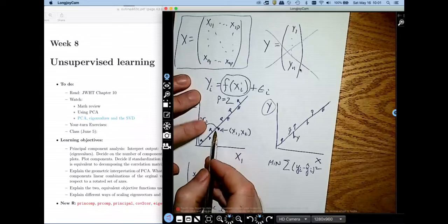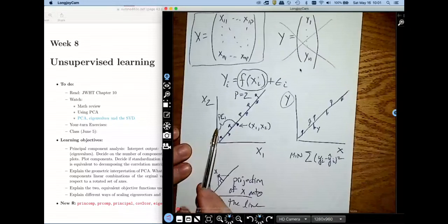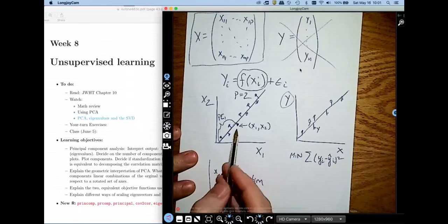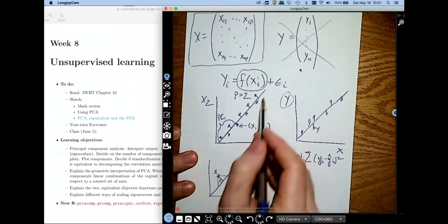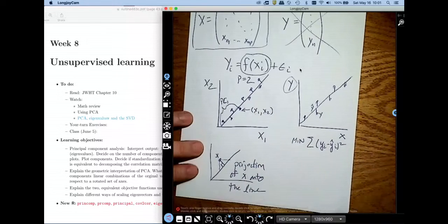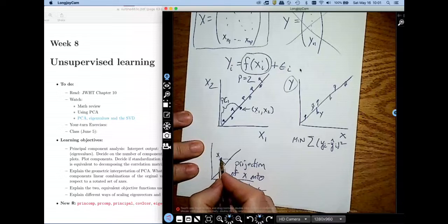In principal components analysis, we're not going to say that x2 is special, or we're not going to say that x1 is special - they have equal status. Therefore, in determining this line, I'm going to give them equal weight.